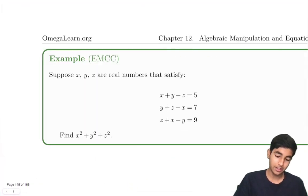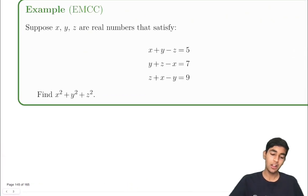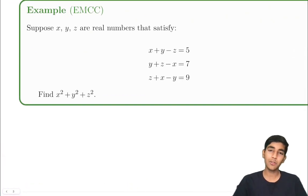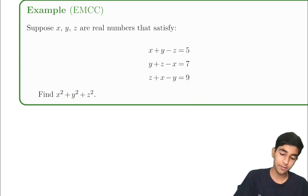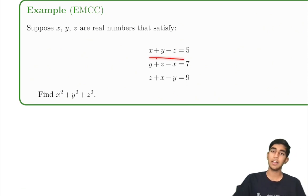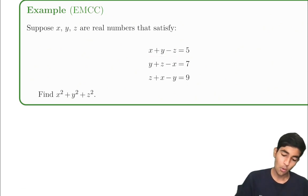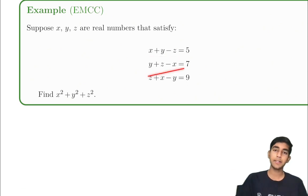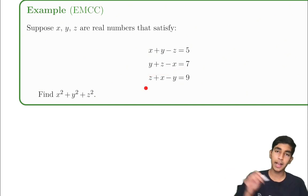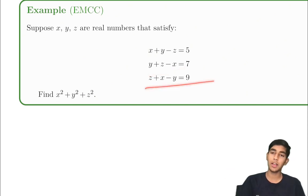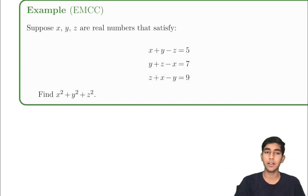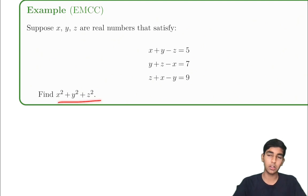Let's start off with this example. Suppose x, y, and z are real numbers that satisfy: x plus y minus z equals 5; y plus z minus x equals 7; z plus x minus y equals 9. Find x squared plus y squared plus z squared.